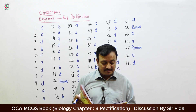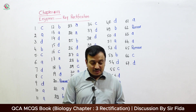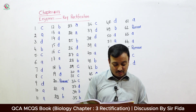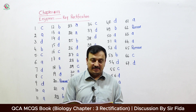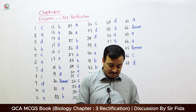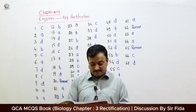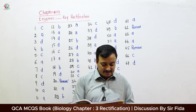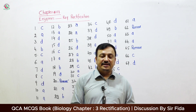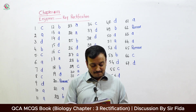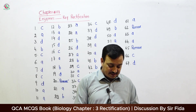Question 5: Enzymes are very specific in their action, acting on a specific — correct answer is C: substrate. Question 6: Which one of the following enzymes digests protein in acidic medium? Correct answer is A: Pepsin. Question 7: The rate of enzyme activity will double up to a certain limit if an increase occurs in temperature by — correct answer D: 10 degrees centigrade.